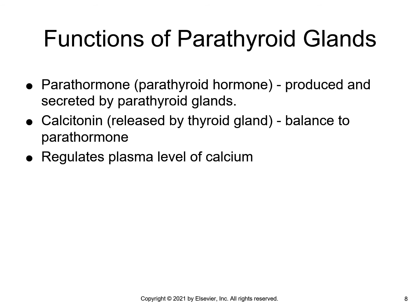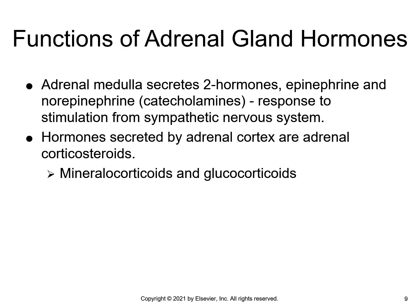Parathormone acts on the renal tubules to increase the excretion of phosphorus in the urine and to stimulate the reabsorption of calcium. This also stimulates the production of the active form of vitamin D, which enhances calcium absorption in the small intestine. Parathormone also acts on bone, causing the release of calcium from the bone into the bloodstream. The adrenal glands secrete small amounts of androgenic hormones, which have similar effects to those of both male and female sex hormones.